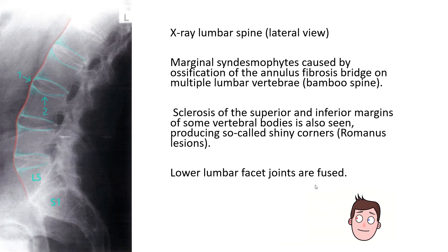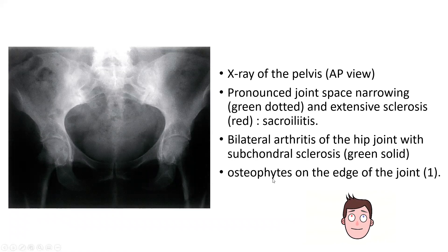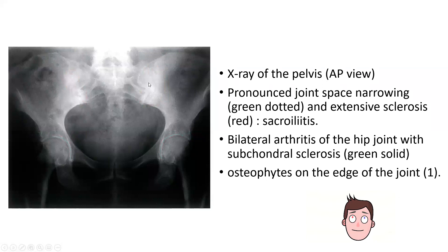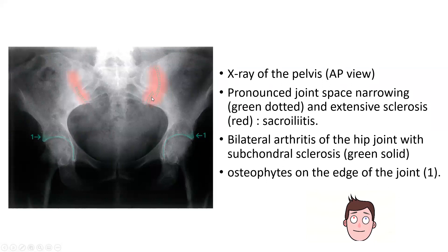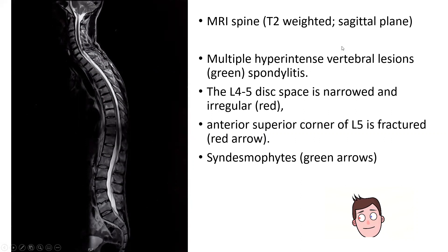The pelvis X-ray is very important — this is our diagnostic X-ray. In the AP view of the pelvis, the sacroiliac joints show inflammation outlined in green, and arthritis in the hip joints is also labeled. You'll commonly see sclerosis — appearing white — and extensive narrowing of the joint space outlined in the dotted green pattern.